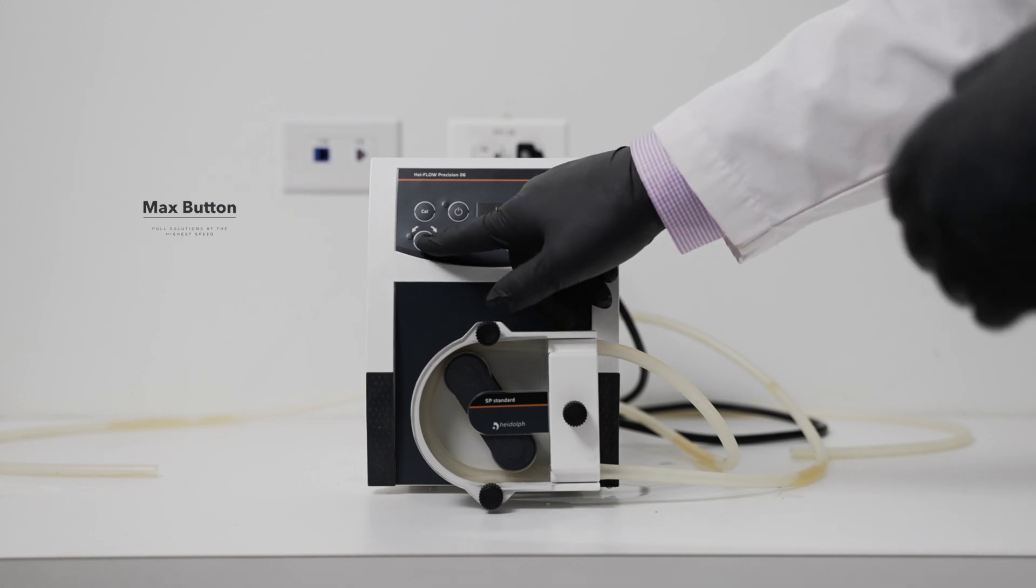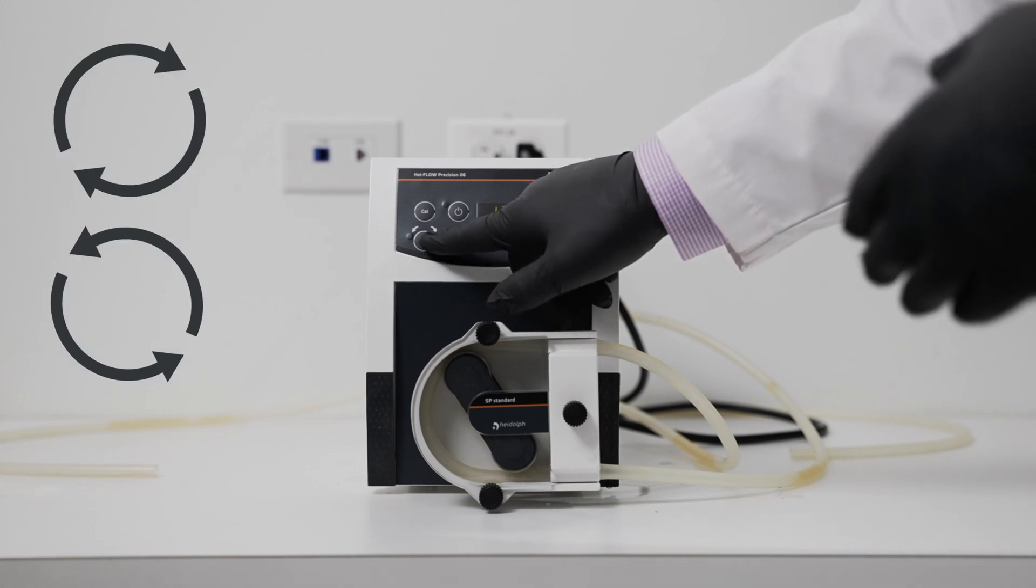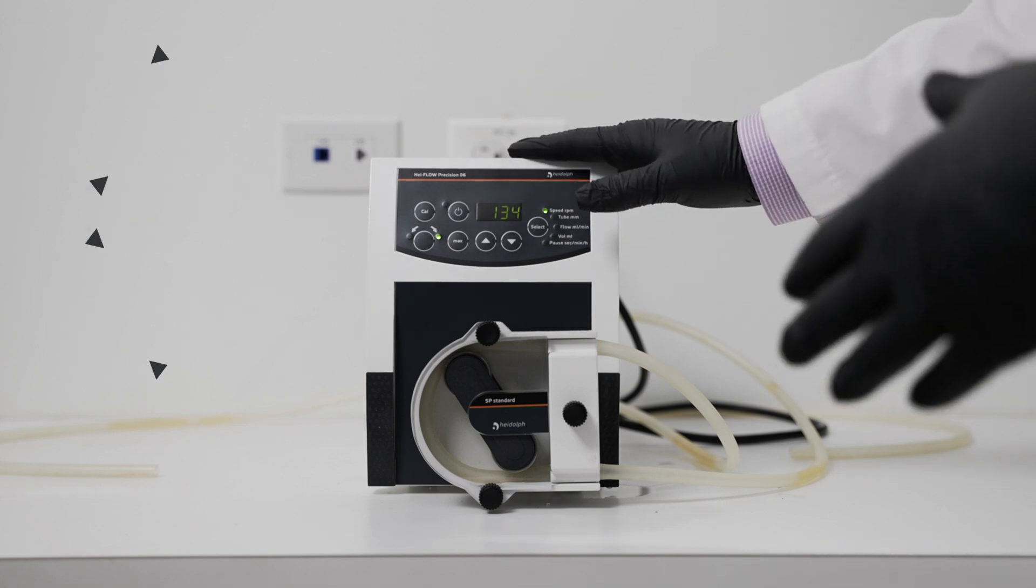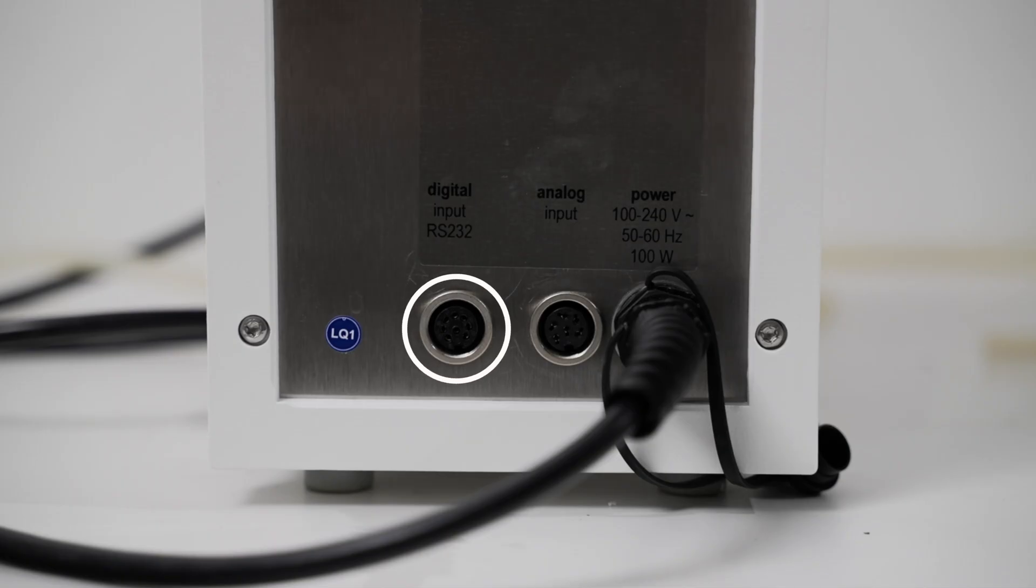You can change between counter and clockwise, and the High Flow Precision has RS-232 connectivity at the back so you can program it through a computer.